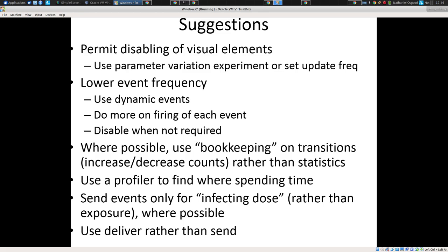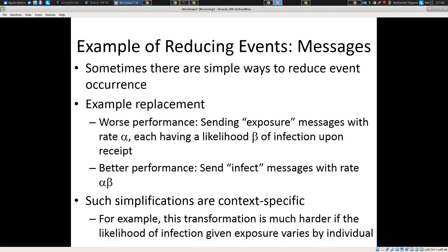Some other suggestions: lower event frequency; don't have visual elements updated too frequently. There are clever ways to compute statistics incrementally rather than doing full sweeps over the population. You can send fewer messages — like instead of sending a potentially infecting message to everyone around me at a 1% infection rate, I only send a message at 1% of that rate to people around me. It turns out that's approximately the same result.